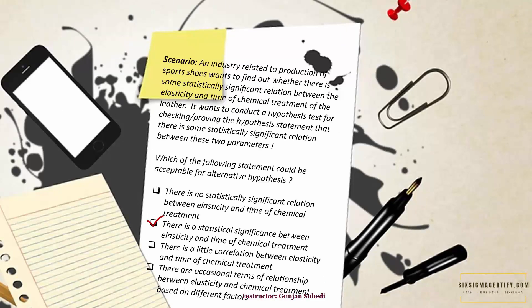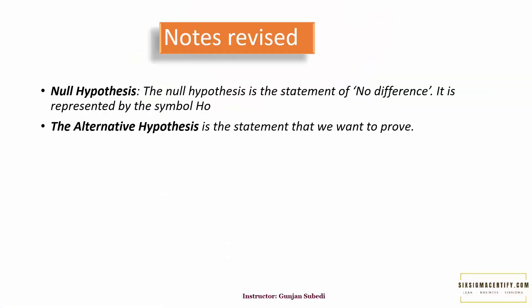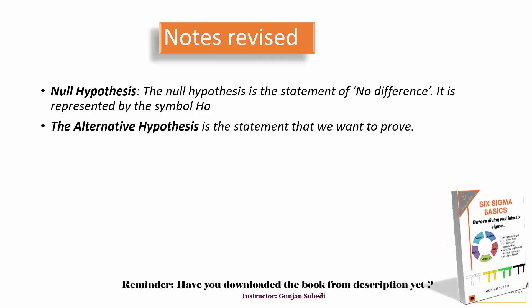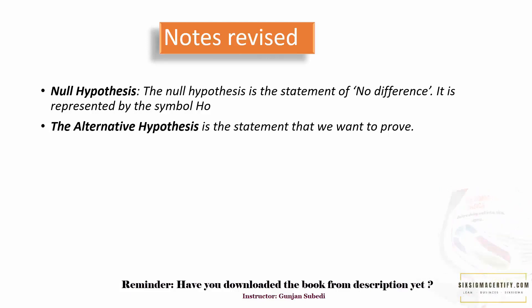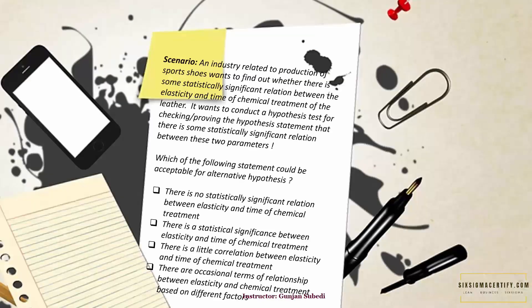The correct answer to this question is option number two: there is statistical significance between elasticity and time of chemical treatment. Alternative hypothesis is the hypothesis that we want to prove. If we want to test the neutrality or association between two terms, the null hypothesis will be that there is no significant relation between those two terms, and the alternative hypothesis will show that there is some statistical significance. The null hypothesis is the statement of no difference, represented by H-naught. The null hypothesis for this case would be there is no difference between time of chemical treatment and elasticity of the leather, and the alternative hypothesis says there is a significant statistical relationship.